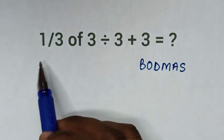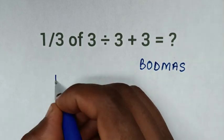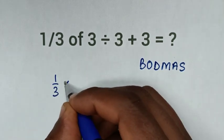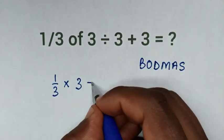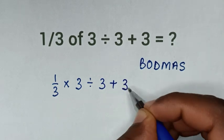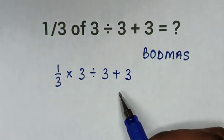First, let's explain this problem. 1 over 3 of 3 is the same as 1 over 3 times 3, then divided by 3 plus 3. Now from here it is simple to understand this problem.